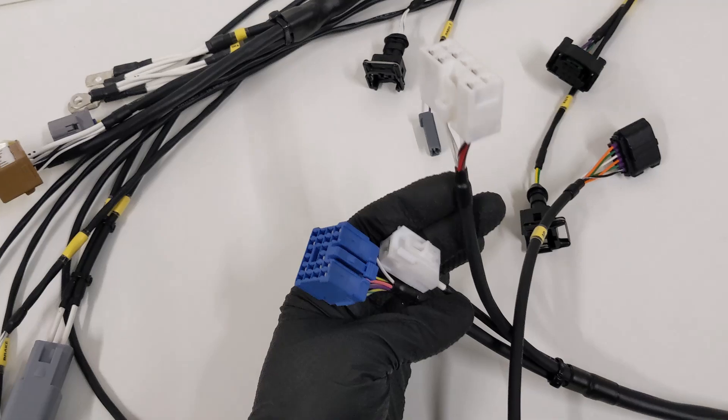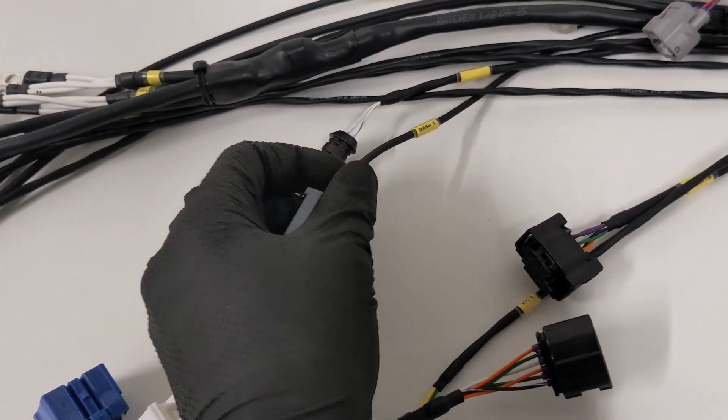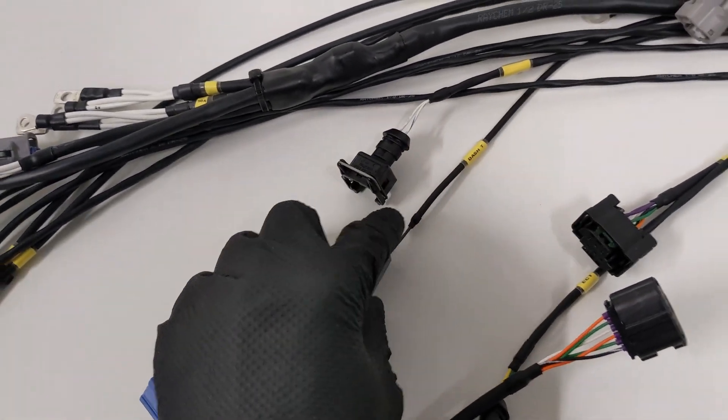One of the things we like to do here is try and retain all the factory functionality if possible. An example of that would be the dash temperature. We include that on the wiring loom as well.